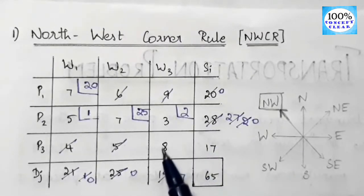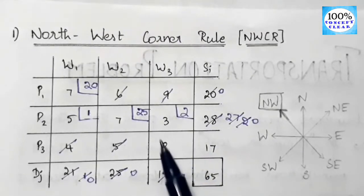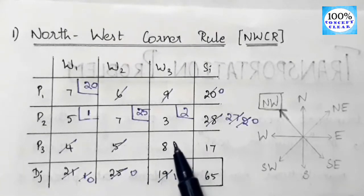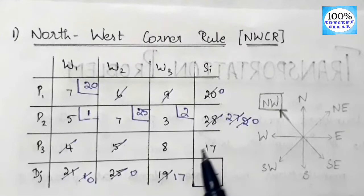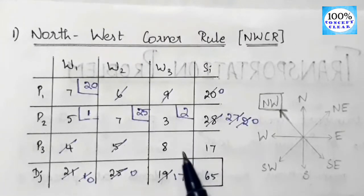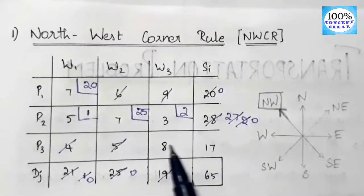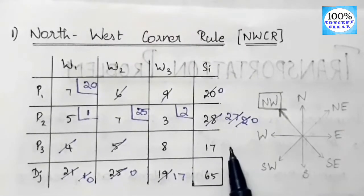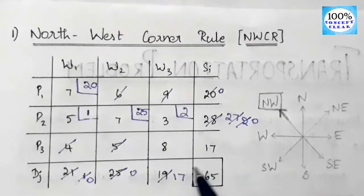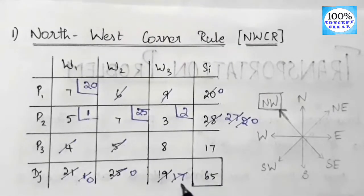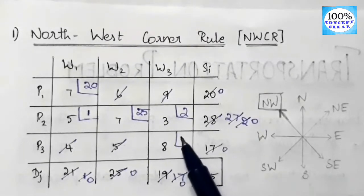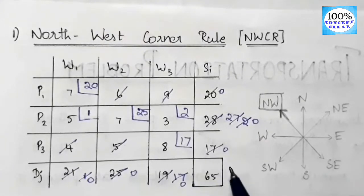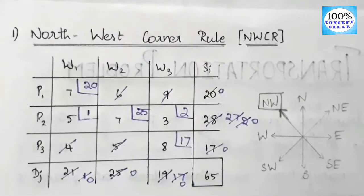Now only one cell remains (P3–W3, cost 8). Supply is 17 and demand is 17 — they are equal, so we allocate 17 here. All allocations are now complete.